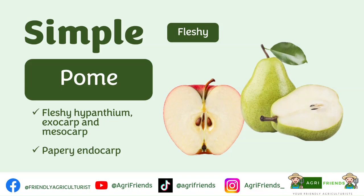Pome is an accessory fruit. The fleshy part is the hypantium or the enlarged receptacle, up to the mesocarp, but with a cartilaginous core. This is the exocarp, this is the mesocarp, and this papery or cartilaginous part is the endocarp. An example of a pome is apples and pears.